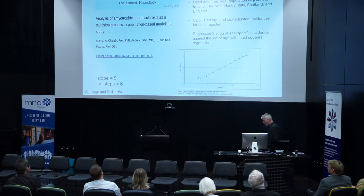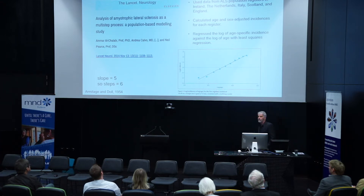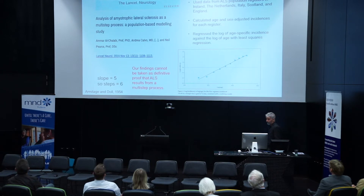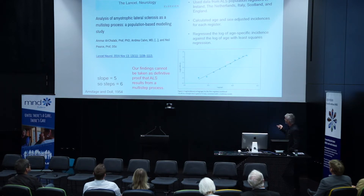I'm going to explain how that works, because if you look at that, you wonder: how can you possibly plot the log of age against the log of incidence and work out how many steps there are in a disease? They also said this cannot be taken as definitive proof that ALS is a multi-step process. But the interesting thing is, for each of these registers, they got the same result.